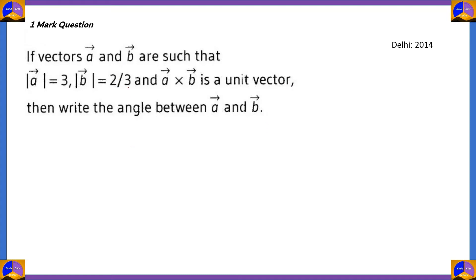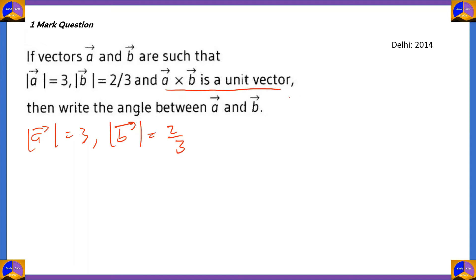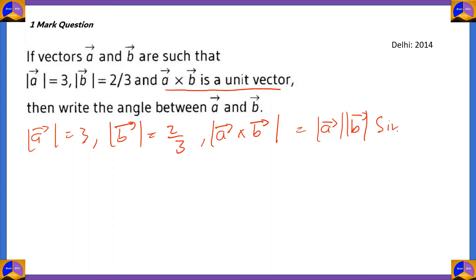We're given the magnitudes: magnitude of vector a is 3, magnitude of vector b is 2/3. We know that a cross b is a unit vector. So if a cross b is a unit vector, then modulus of a cross b = modulus of a × modulus of b × sin θ = 1, because for a unit vector the magnitude is always 1.